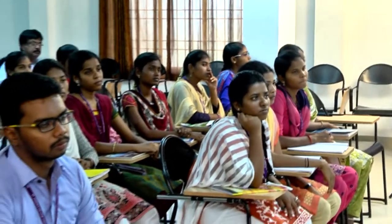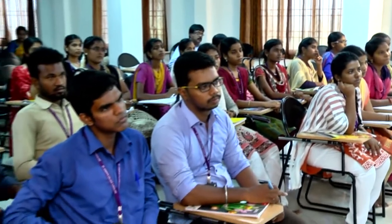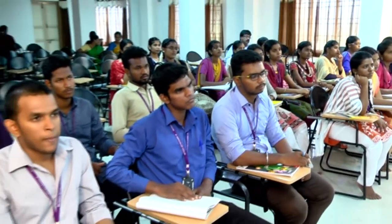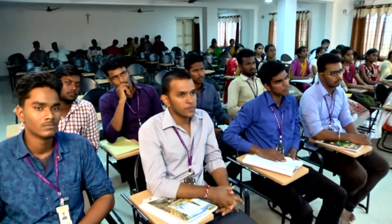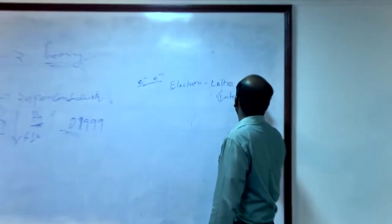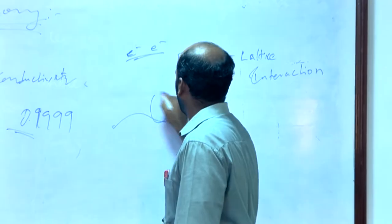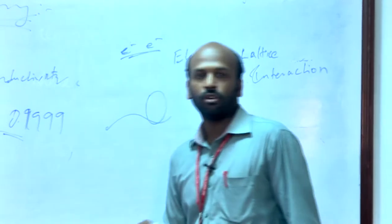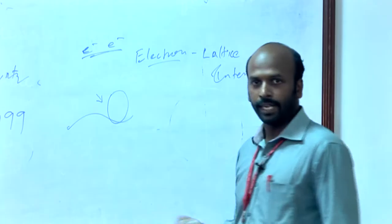As we all know, current means flow of electrons. The BCS theory explains electron-lattice interaction. Lattice is the place where atoms are stored or placed, and there is an interaction between the electron and the lattice.